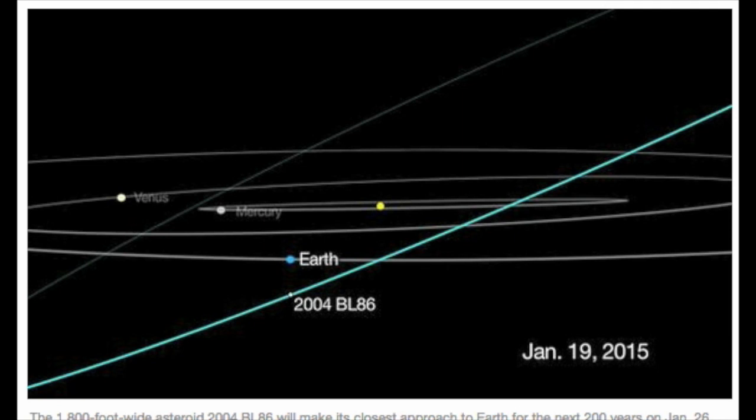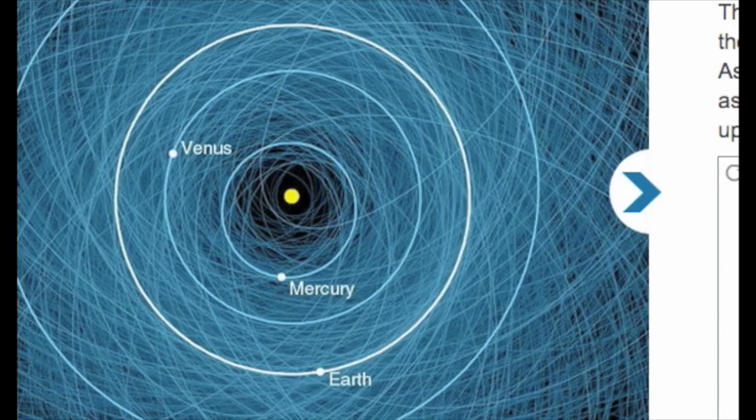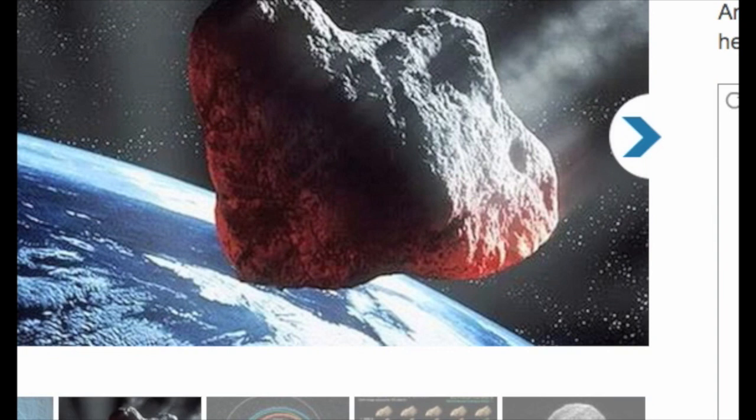The asteroid 2004 BL86 will fly by Earth on January 26, passing at a range of about 745,000 miles, about three times the distance between the Earth and the Moon. It will be the asteroid's closest approach to Earth for the next 200 years, according to NASA scientists.